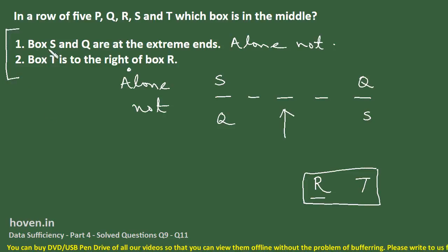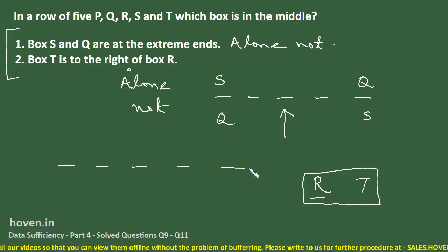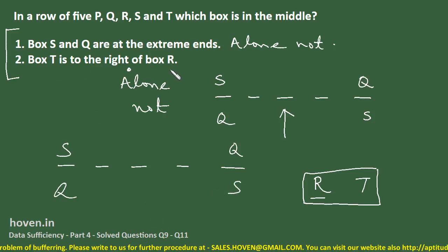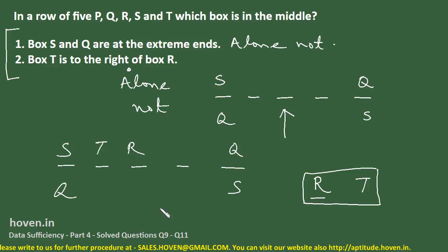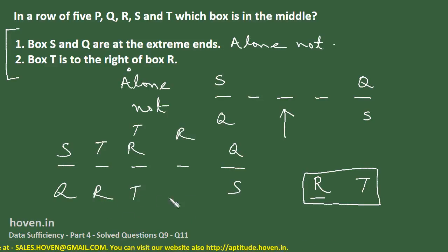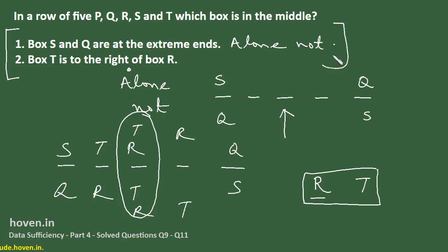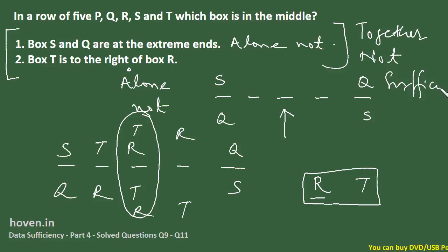Now let us try combining both statements. From statement one, S and Q are at the extreme ends. From statement two, T is to the right of R, meaning R and T are adjacent. Considering all possible arrangements, the middle position could be occupied either by T or R. So both statements together are also not sufficient to determine the middle box.